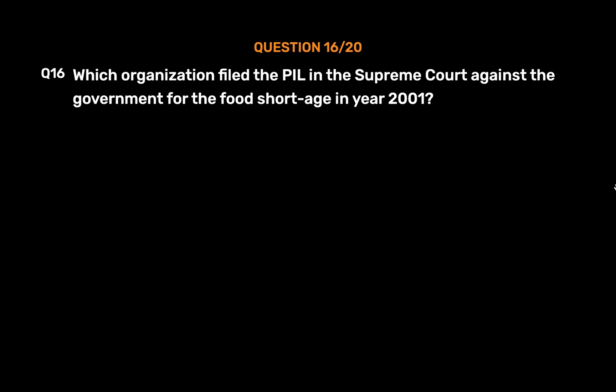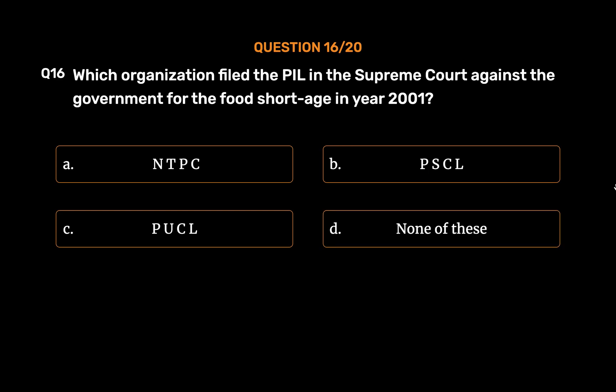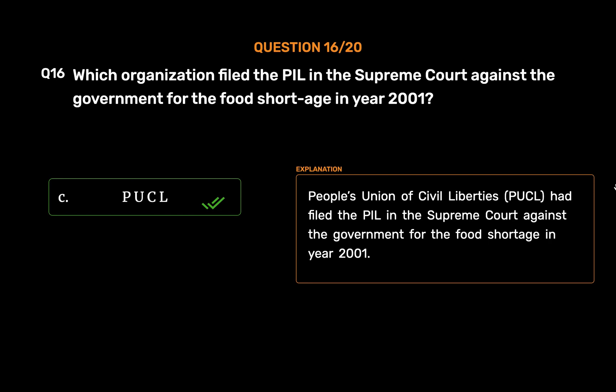Question No. 16. Which organization filed the PIL in the Supreme Court against the government for the food shortage in the year 2001? Option A: NTPC. Option B: PSCL. Option C: PUCL. Option D: None of these. The correct answer is Option C: PUCL. People's Union of Civil Liberties (PUCL) had filed the PIL in the Supreme Court against the government for the food shortage in the year 2001.